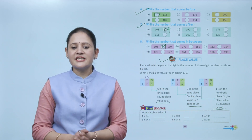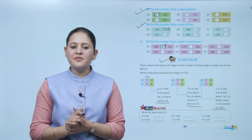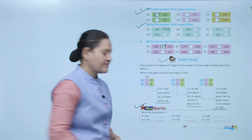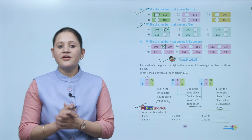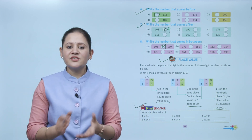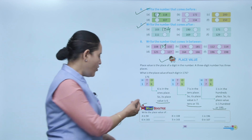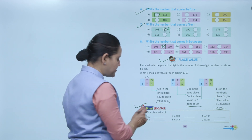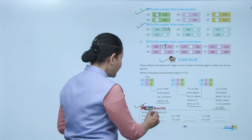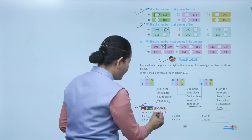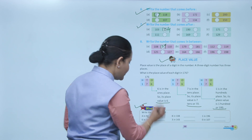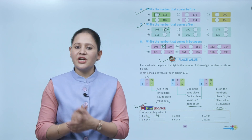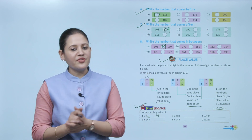Next is Mind Booster: write the place value of four in 94. Four is at the ones place, so the place value of four is 4. Like this, you have to write the place value of the given digit.